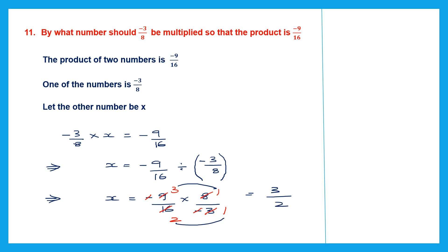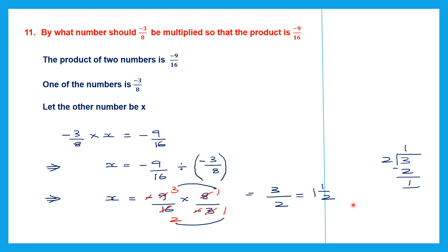Now let's multiply what's in the numerator: 3 ones are 3, and in the denominator we have 2. So we get 3 by 2, which is an improper fraction — convert it to a mixed number: 2 ones are 2, remainder is 1. So we get 1 and 1 by 2. By what number should minus 3 by 8 be multiplied so that the product is minus 9 by 16? The answer is 1 and 1 by 2. You can check: multiply 1 and 1 by 2 with minus 3 by 8 and your answer should be minus 9 by 16.